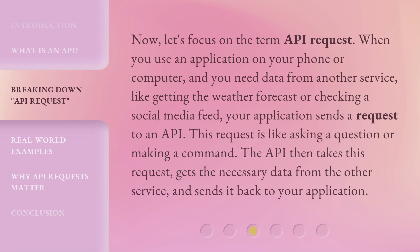Now, let's focus on the term API Request. When you use an application on your phone or computer and you need data from another service — like getting the weather forecast or checking a social media feed — your application sends a request to an API. This request is like asking a question or making a command. The API then takes this request, gets the necessary data from the other service, and sends it back to your application.